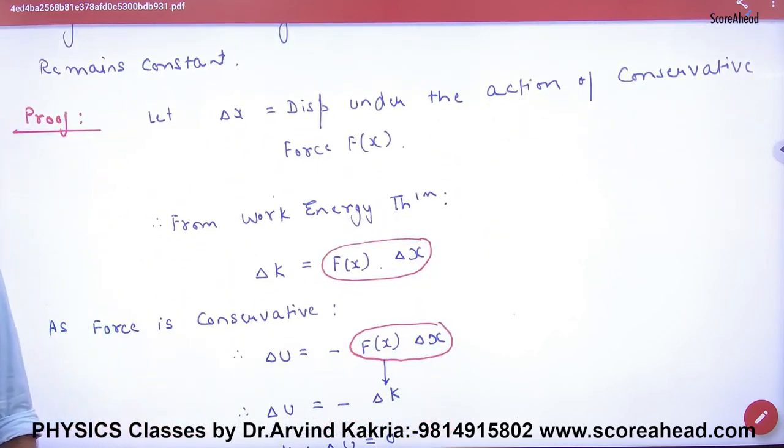One is mathematical proof, one is experimental proof. Mathematical will remain mathematical. Experimental is easier. Mathematical means that...